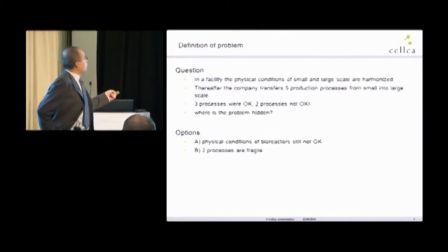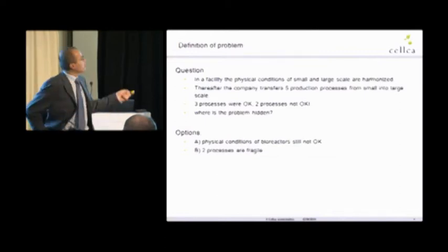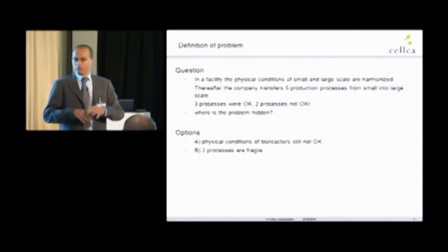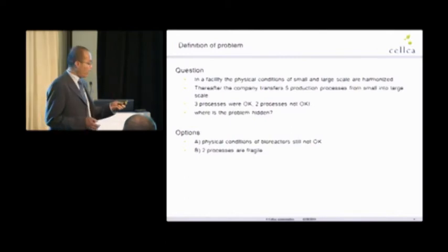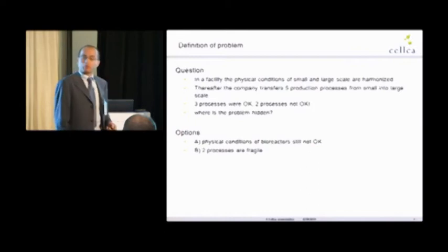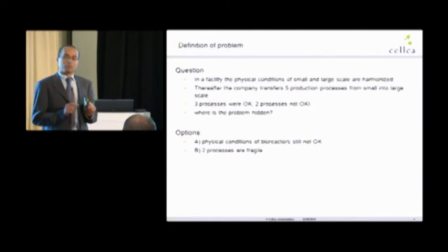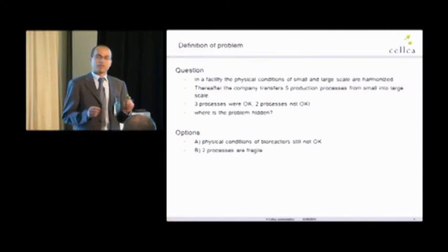There are actually two options. One of them is physical conditions of bioreactor is still not okay. That means even though we have invested work, money, and characterized all these physical conditions, maybe it is still not optimized. But if it is not optimized, why were these three processes okay? Another option is two processes are fragile. In this case, sometimes we use the terminology the process is not scalable, or the process is maybe scalable but fragile. That means it is not robust.